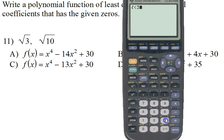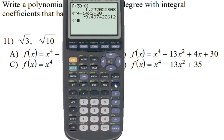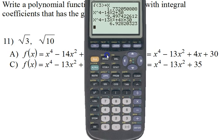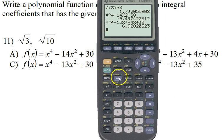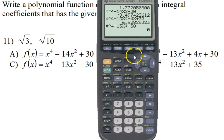I'm going to do square root of 3, I'm going to store it as x. And then I'm going to type in my first answer choice, x to the fourth minus 14x squared plus 30. I don't get zero, so that means it can't be the answer. x to the fourth minus 13x squared plus 4x plus 30. I don't get zero, that can't be the answer.